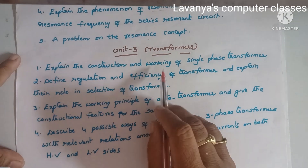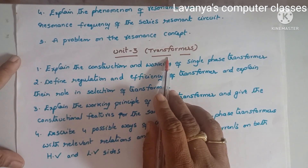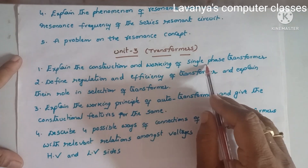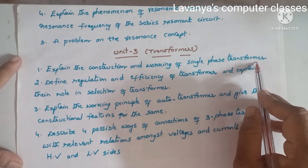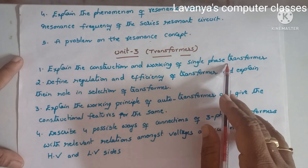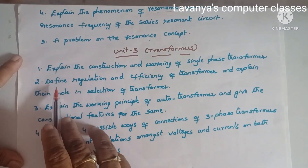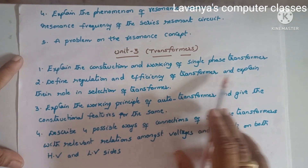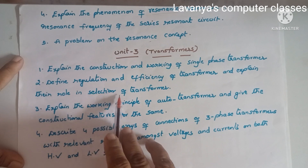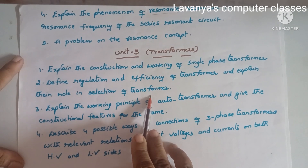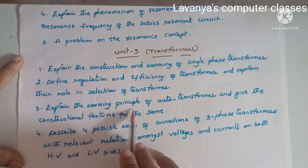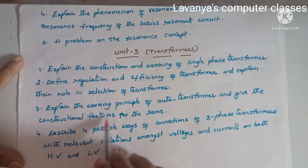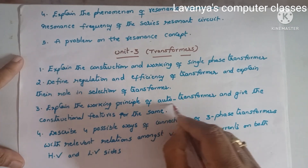Unit 3 is transformers. The important questions are: explain the construction and working of a single-phase transformer; define regulation and efficiency of a transformer and explain the role in selection of a transformer; explain the working principle of an auto-transformer and give its constructional features.